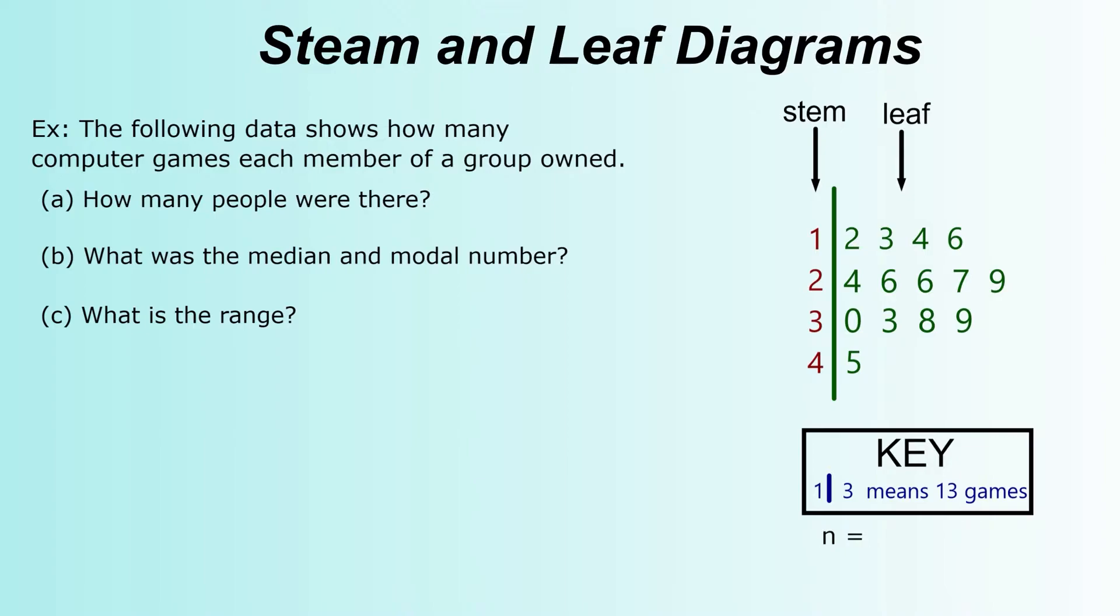There's a few key bits of information that you have to have in a stem-and-leaf diagram. And these are the parts people normally forget. The key tells you what exactly the information in the stem-and-leaf diagram represents. So for instance here, a one with a three would mean 13 games. In the context of the question, it's saying this is a survey asking people how many computer games they owned.